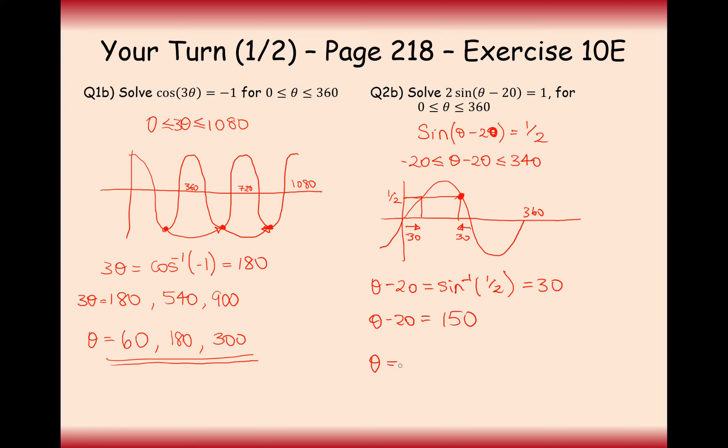Now all that's left for us, we don't have any more values for sine of something equals a half, so we'll finish the question there. But first of all, we need to add on 20 back onto the other side, so it's 50 and 170. Those are our two answers there, that when we do sine of that angle minus 20, we get a half.